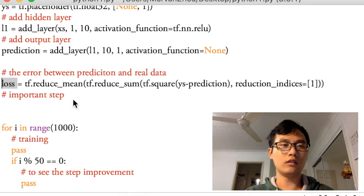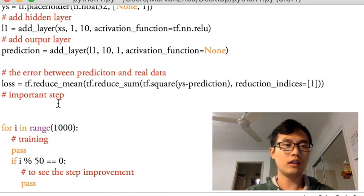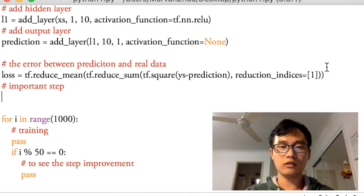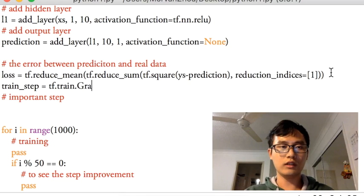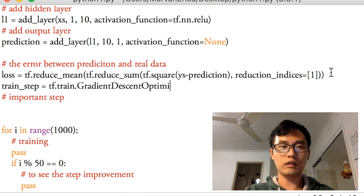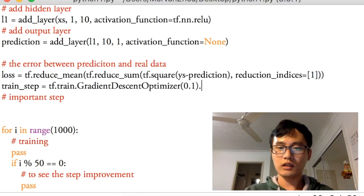And later on, we're going to define the train_step as tf.train.GradientDescentOptimizer with 0.1 as the learning rate, and minimize the loss.